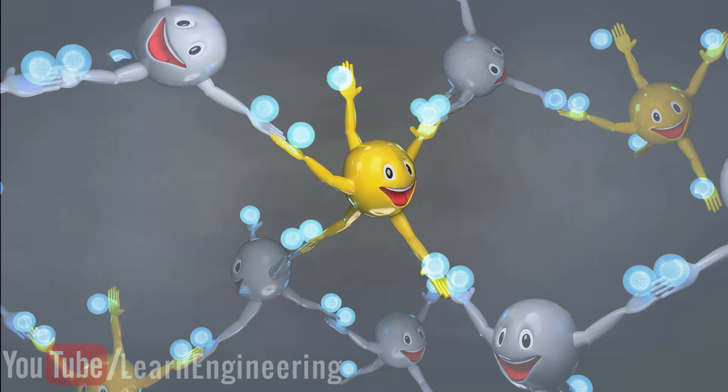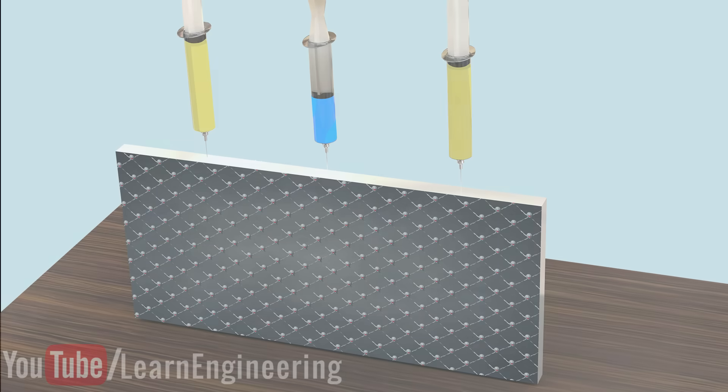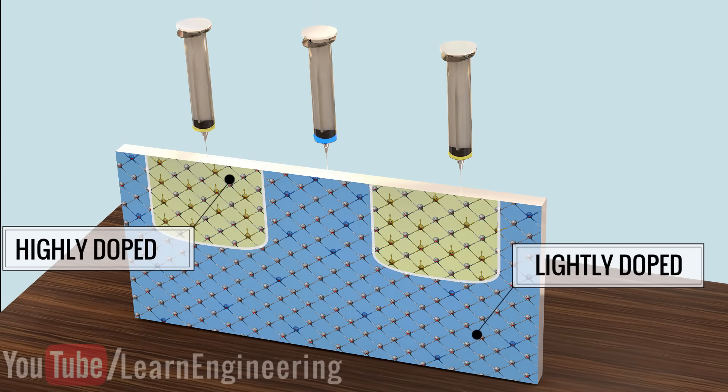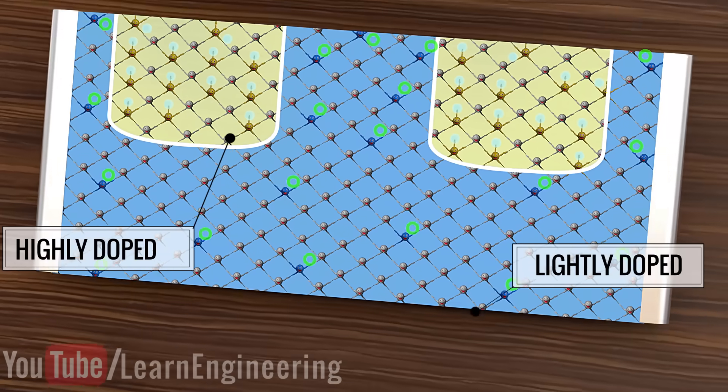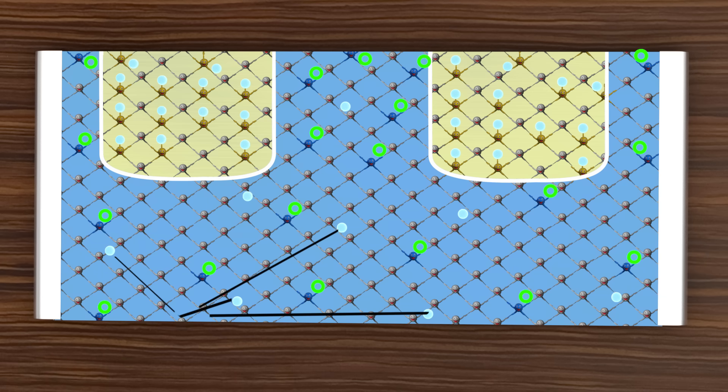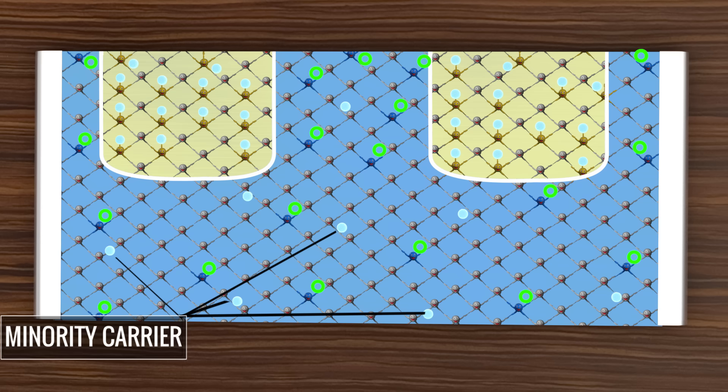Now let's get back to the workings of MOSFETs. If you dope a silicon wafer in the following manner, you will get the basic structure of a MOSFET. It is interesting to note that even in the P region, there are very few free electrons that are capable of conducting electricity. We call them minority carriers. Later, we will see why the minority carriers are significant in the MOSFET.